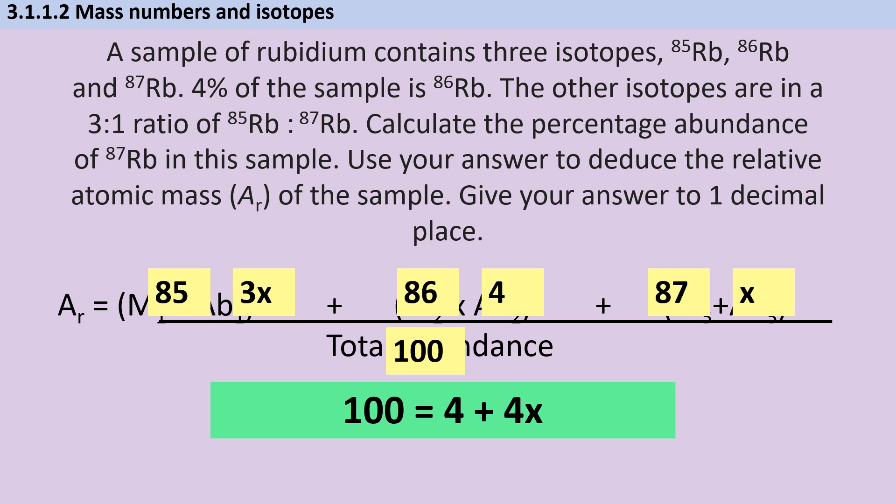So I therefore know that 100% of all of the atoms together is made up of this 4% that is already the 86 and then the 4x. So based on that, x is 24. And I can say that I've got 24% of my isotope with a mass of 87 and 72% is my isotope with a mass of 85.